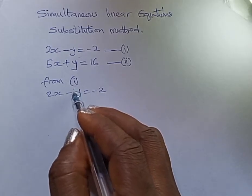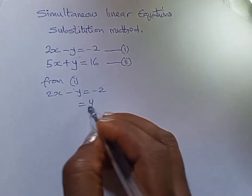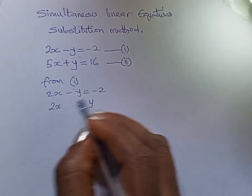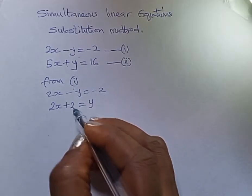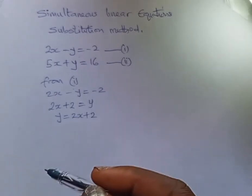It's easier with the one with coefficient one. I can take this over to become y, then I will make minus two come over which is 2x, changing sign because of the equality sign, becoming positive two here. So y = 2x + 2.